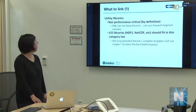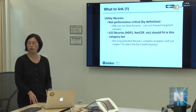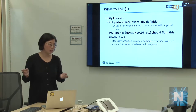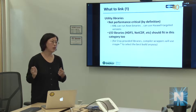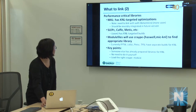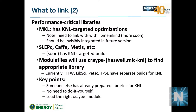Regarding linking: not all libraries have been rebuilt for KNL, because most — such as non-performance-critical or IO libraries — don't benefit significantly. Those will reuse the Haswell library, sometimes via a symlink. Performance-critical libraries such as CrayLibSci, FFTW, PETSc, and Intel MKL already have special KNL-optimized builds available.